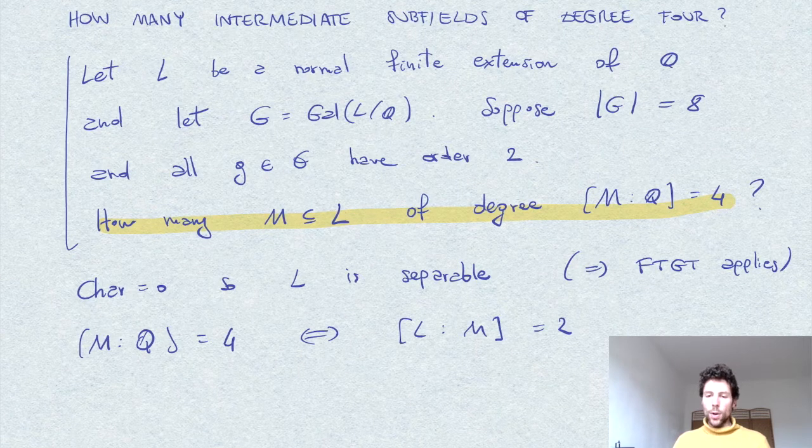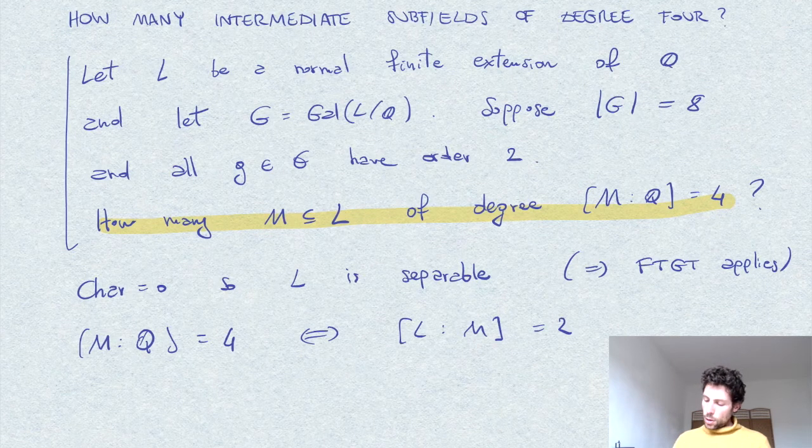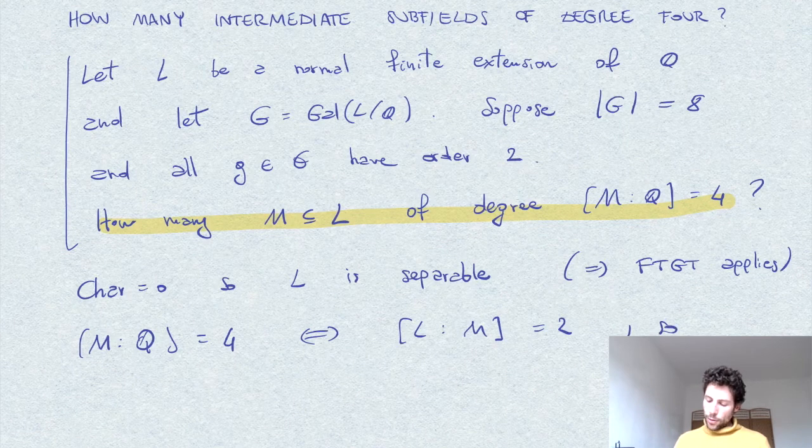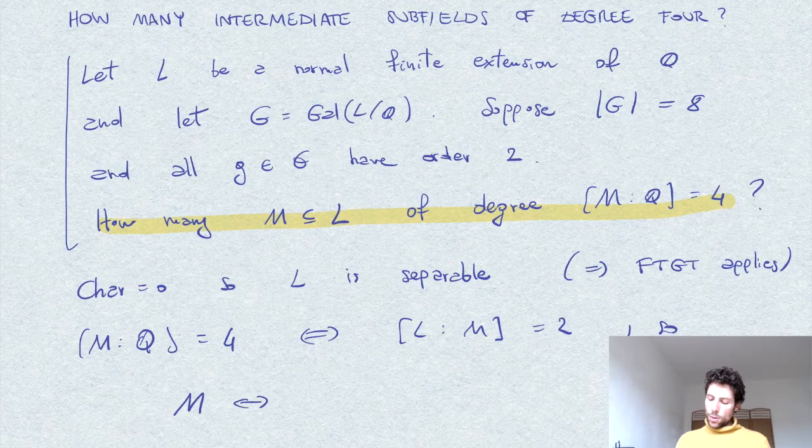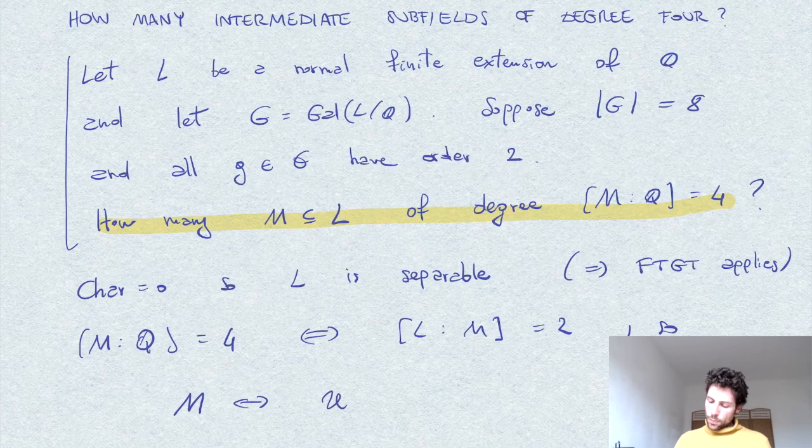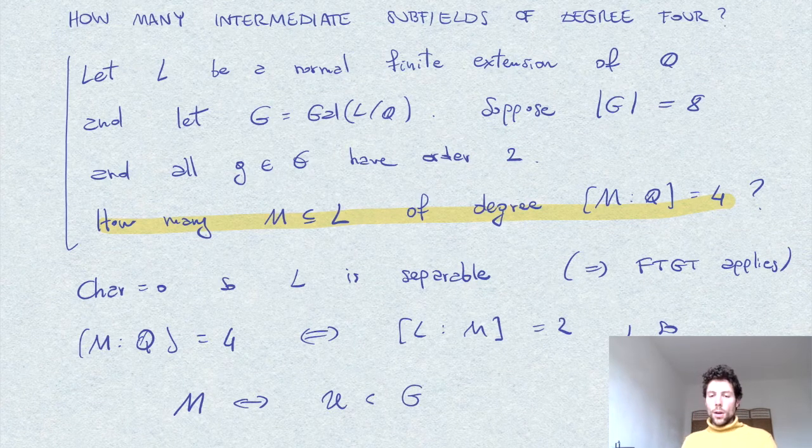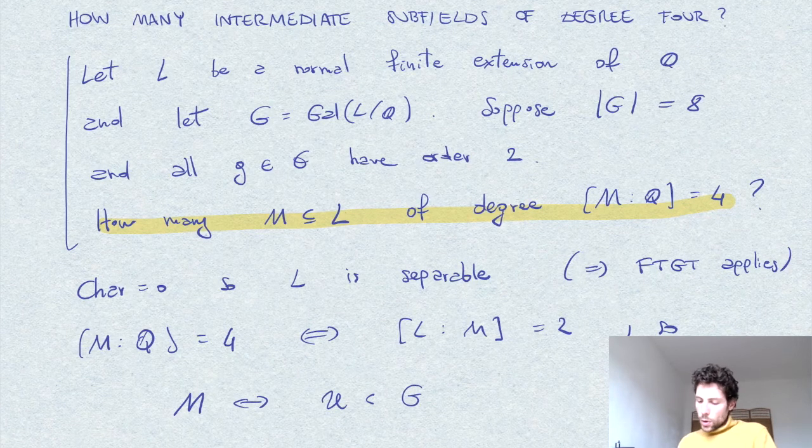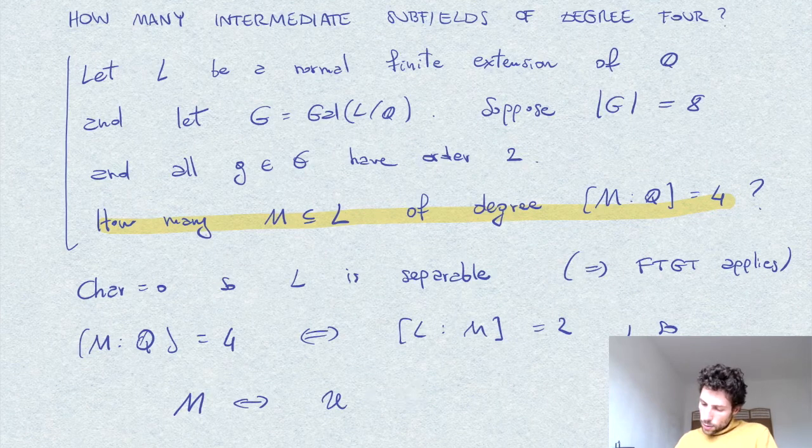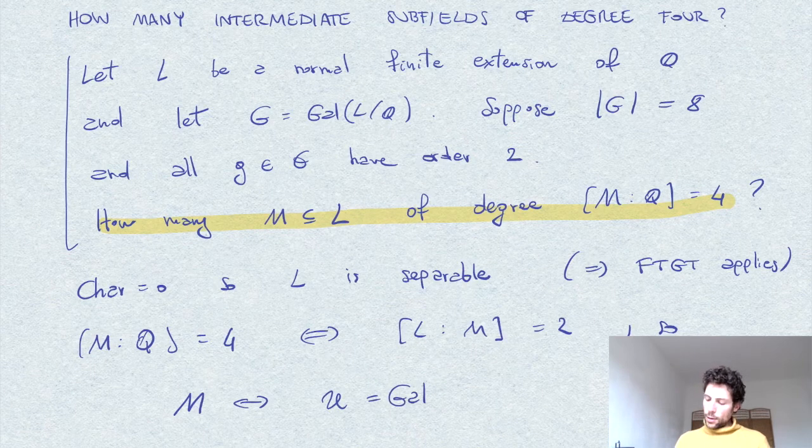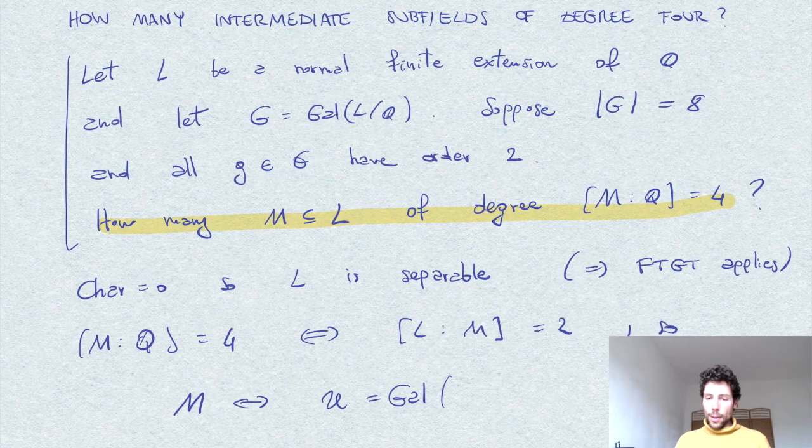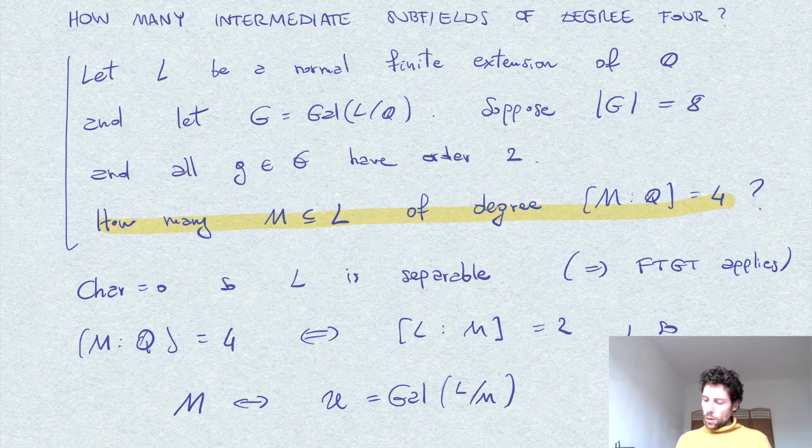So we have that the extension M corresponds to a subgroup, say U, of G, which is the Galois group of L over M, of order 2.